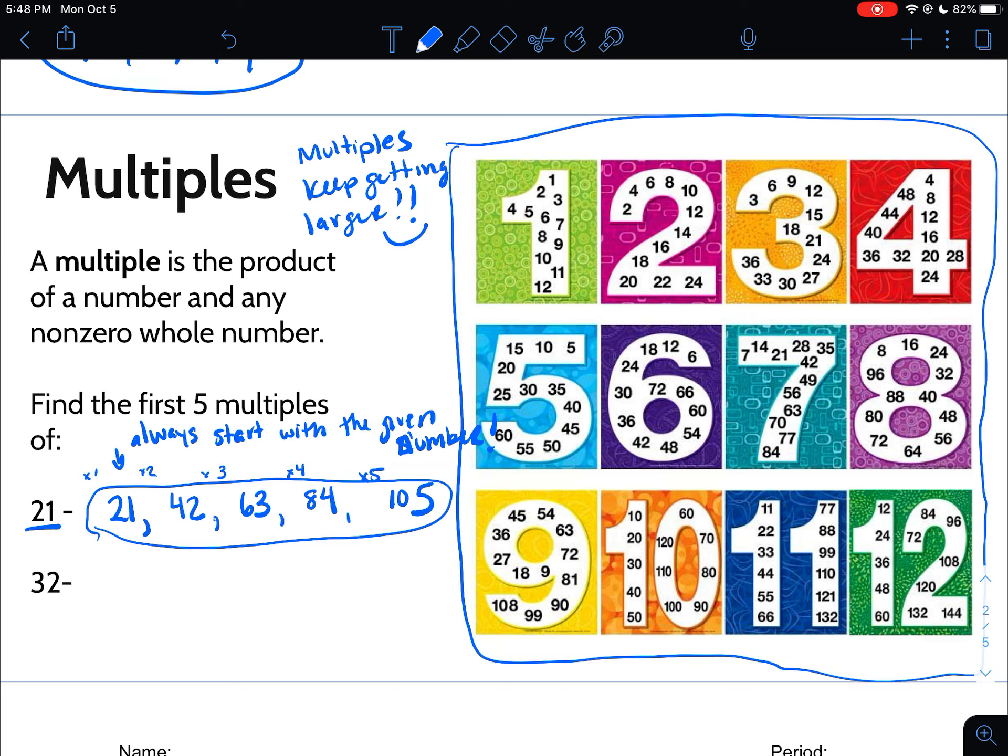Multiples of 32, same kind of thought process. Multiply it by one: 32. Multiply it by two: 64. Times three: 96. Times four: 128. Times five: 160. And those are the first multiples of 32.